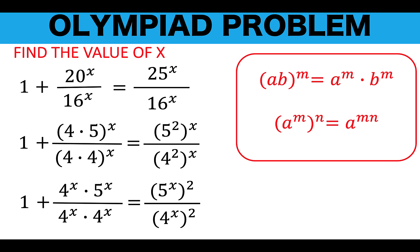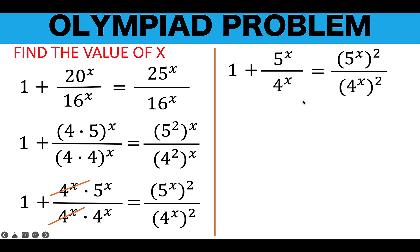The reason behind that is we are going to convert this into an equation that is quadratic in form. First, let's simplify: we have a common factor 4 raised to x in the numerator and 4 raised to x in the denominator, so we can cancel that out, and we arrive at this simplified equation.